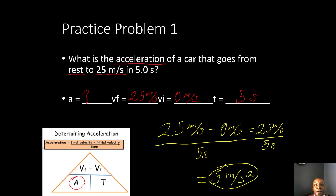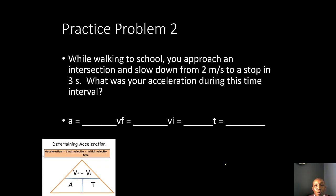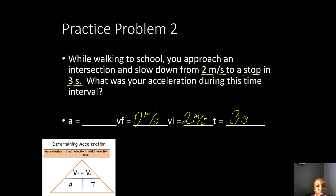Practice problem number two: while walking to school, you approach an intersection and slow down from two meters per second to a stop. You were going two meters per second — that was your initial velocity. When you stop, you're not moving at any speed, so that's your final velocity of zero meters per second. You do it in three seconds — that's your time. What was your acceleration during this time interval?